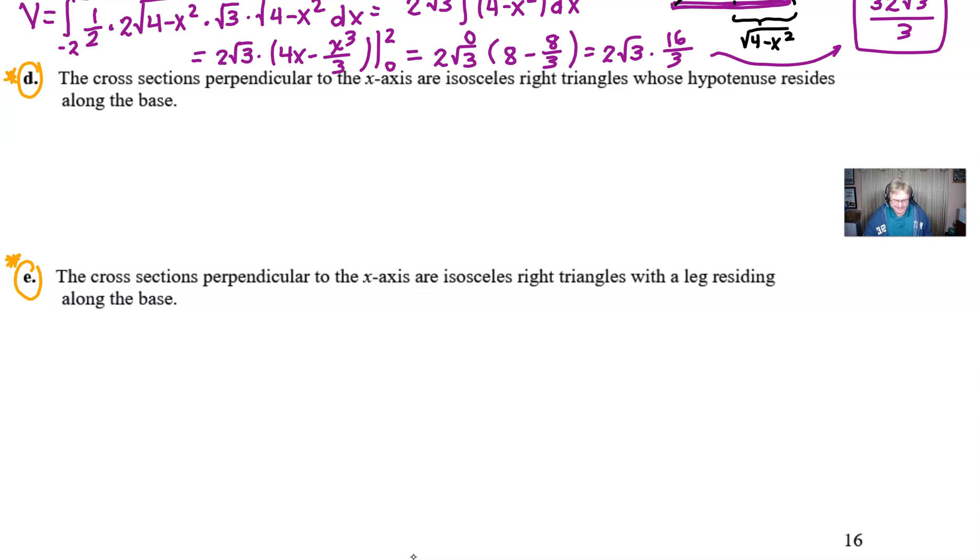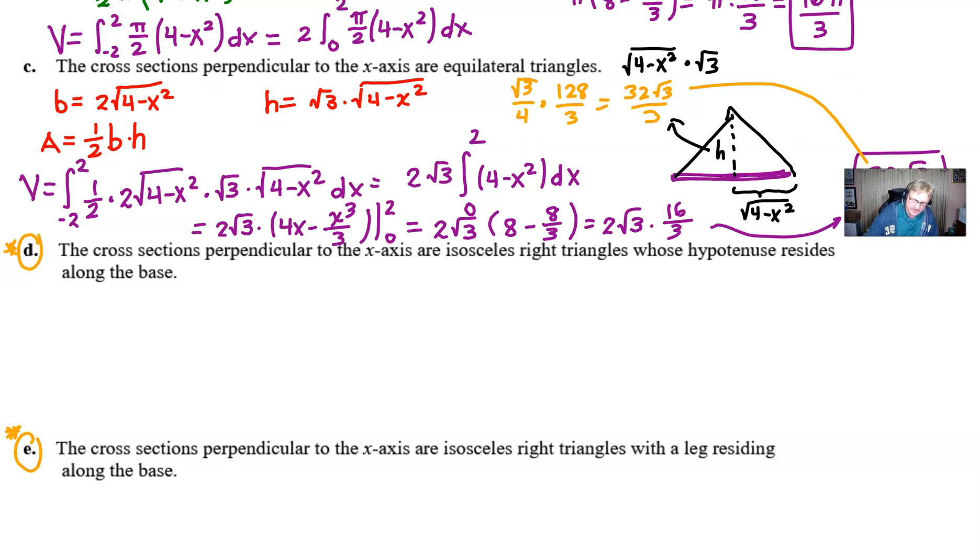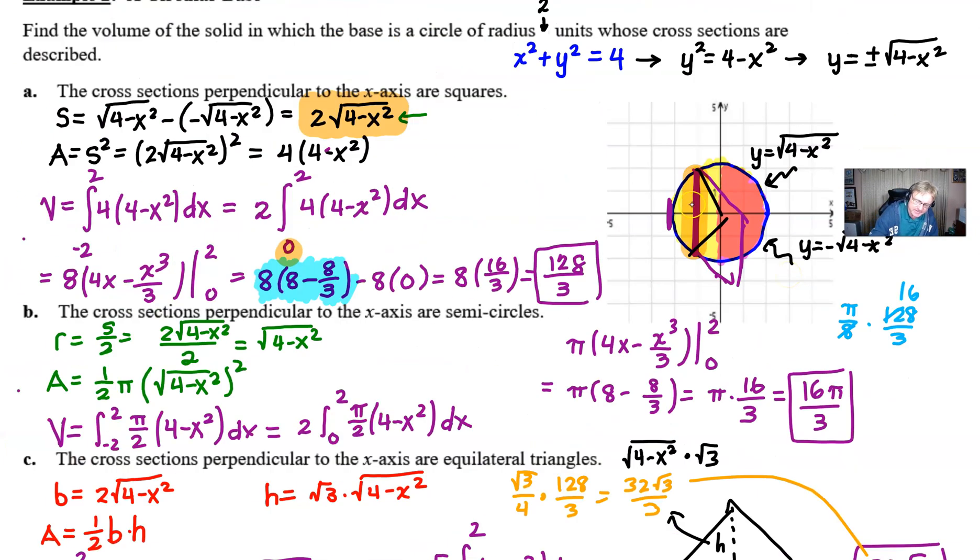Now, what does that mean? Well, if we go up to our picture, it's basically saying to us that this particular length here is going to be the hypotenuse. That's what's in the base or residing along the base. And then these other two sides are just going to be equal to each other.